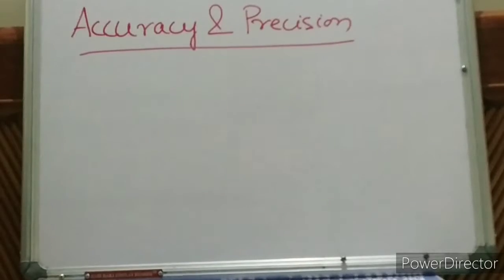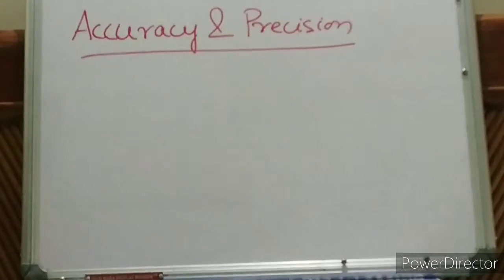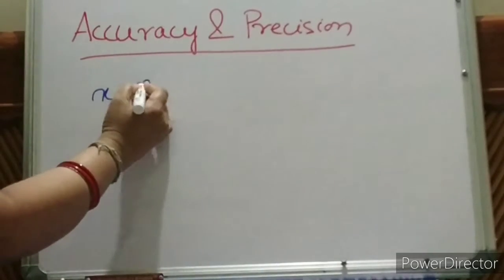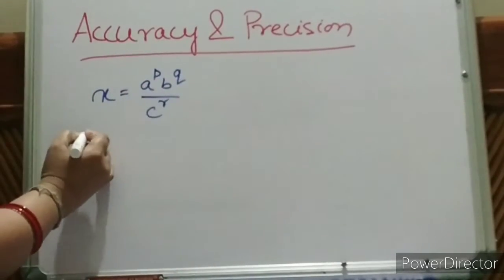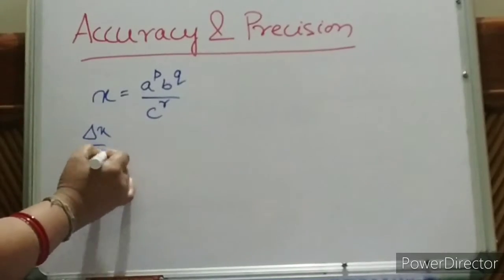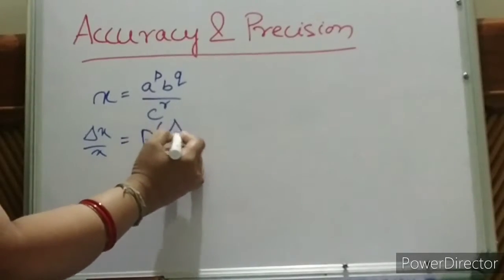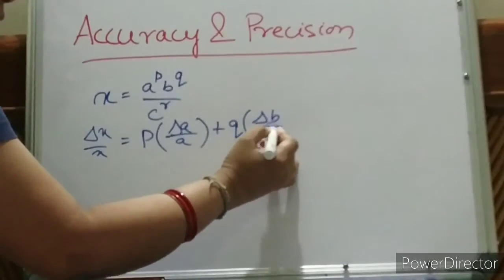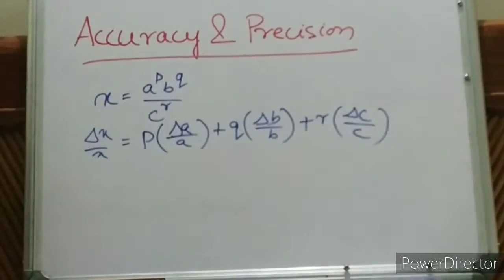Before going to this, let us discuss one example based on the propagation of error. In last class, we finished the propagation of error. The last formula is x = a^p × b^q × c^r. Then delta x by x — the maximum fractional error in x — equals p times delta a by a, plus q times delta b by b, plus r times delta c by c.